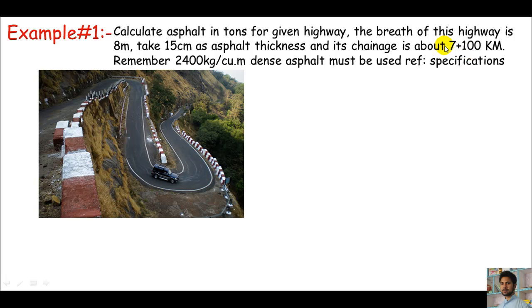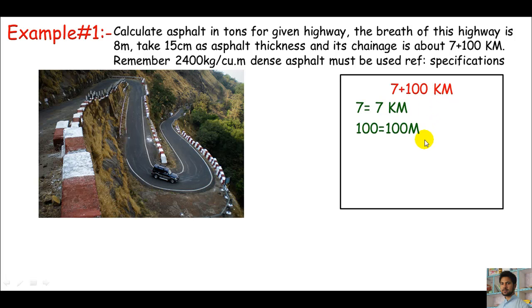One thing is challenging: the chainage of this road which is 7+100 kilometers. What does it mean? If you are a land surveyor you must know. If you are a quantity surveyor you must learn this from land surveyors. Here 7+100, the 7 is 7 kilometers and 100 is 100 meters. When the chainage is in miles, 7 will represent 7 miles and 100 will represent 100 feet.